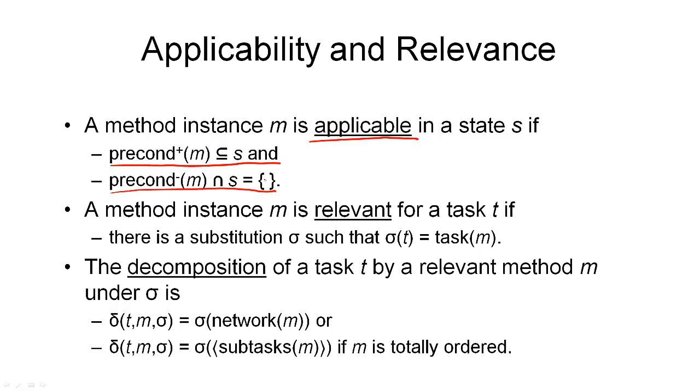But the definition of relevance is quite different from what we've seen previously. We want to define when a method instance m is relevant for a task t. Since we don't have effects in methods and we don't have goals in planning problems, the definition of relevance must be quite different from what we've seen previously. And we define relevance here with respect to tasks that we want to accomplish.